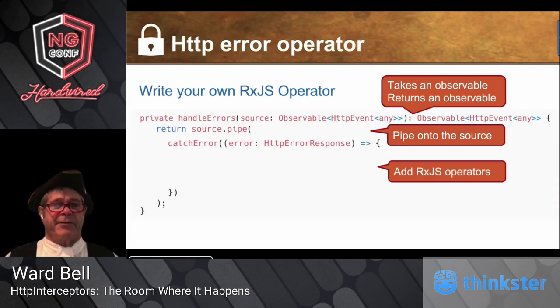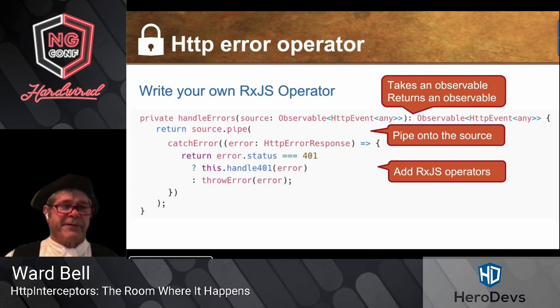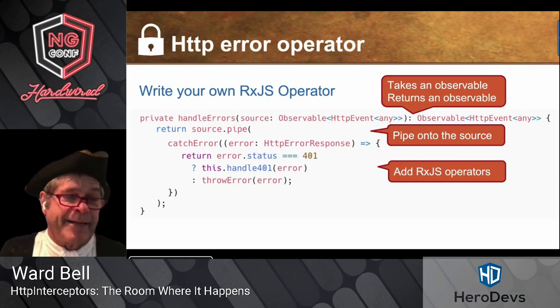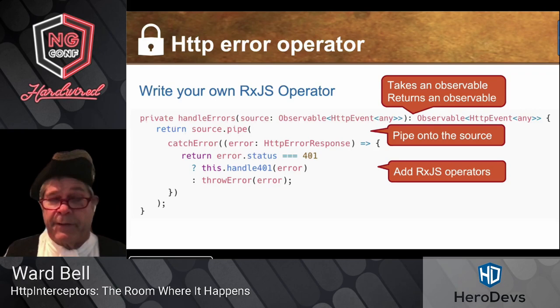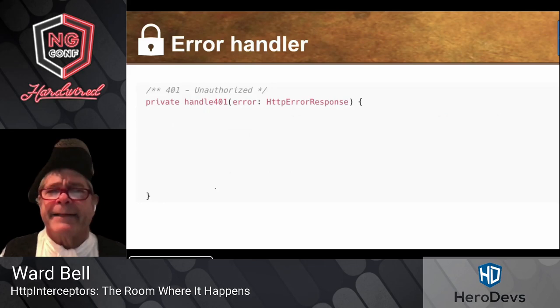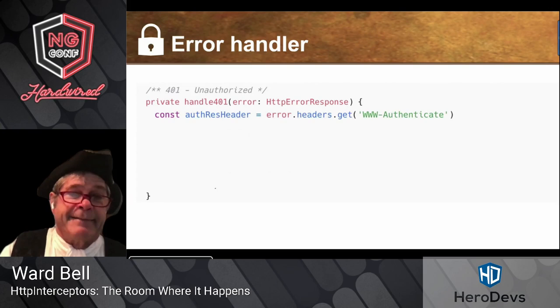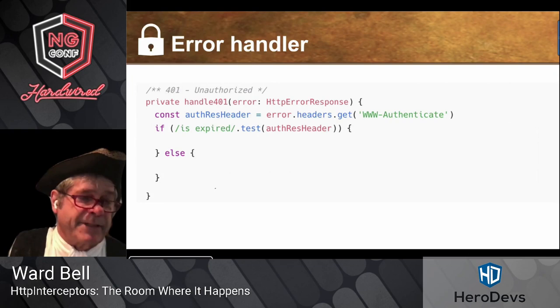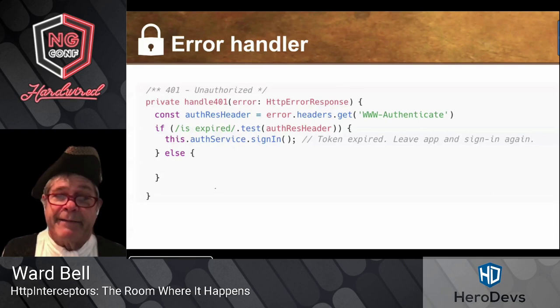In our case we're going to catch the error. If it's good, the response just flies right through — it's a pass-through. Inside catchError, if it's a 401 — meaning you're not authenticated or unauthorized — I pass that on to something that handles it. Otherwise I use throwError and return an error object, which passes back up through the interceptor dolls. For the 401 handler, I dig into the response headers: if the token has expired, I do one thing; for any other cause, I do something else.